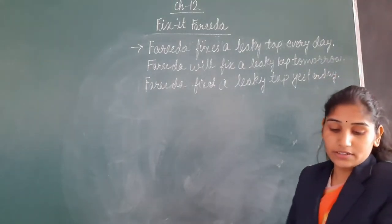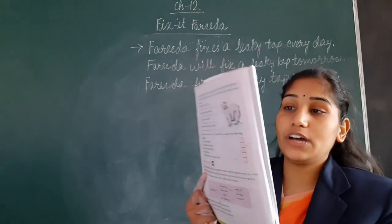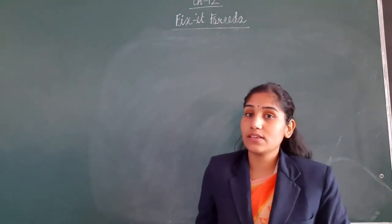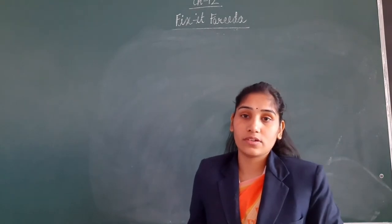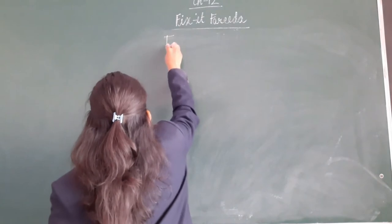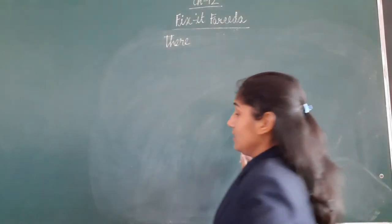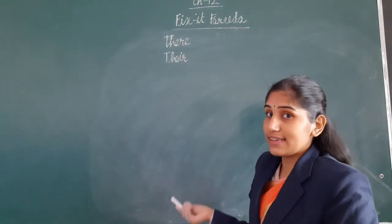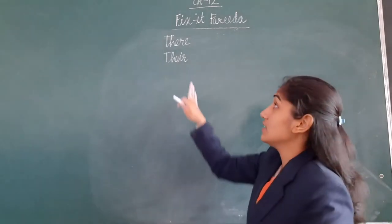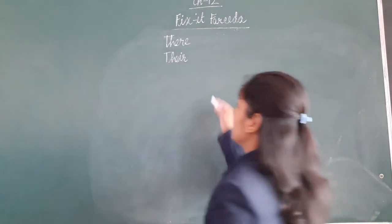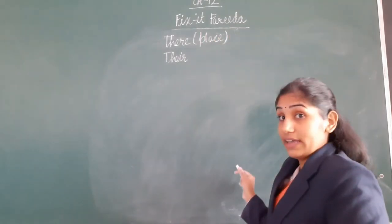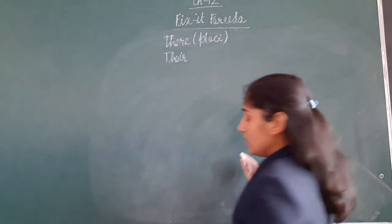We have completed the revision of answers on page number 132. Now we will move to the next part. Do you remember what homophones are? Yes, homophones are words that have similar sounds. For example, 'there' T-H-E-R-E and 'their' T-H-E-I-R. If we speak them, the sounds of both words are the same. But while writing, the spelling is different. T-H-E-R-E 'there' is used to refer to a place, while T-H-E-I-R 'their' is used to refer to a person.